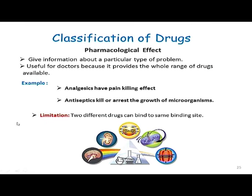This type of classification is actually very handy for doctors and physicians because it gives them an idea about a wide range of drugs available for a particular pathological condition. For a medicinal chemist, though, it has a limitation — two very different drug molecules can bring about the same impact. For example, there could be some analgesics which might also behave as an antiseptic, creating a problem of how to categorize the drug.